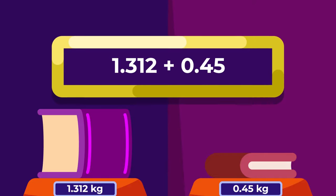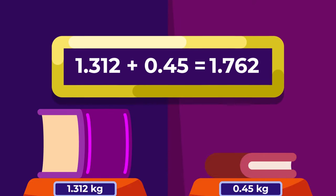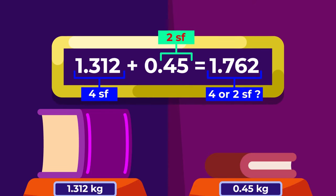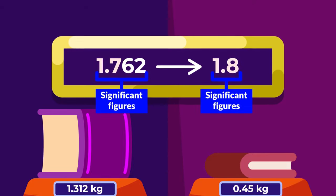Then, how many significant figures must we write if we address both masses? When expressing the total mass of the books, we need to round the result in accordance to the measurement with the least number of significant figures. In this case, we round 1.762 kilograms to two significant figures, 1.8 kilograms.